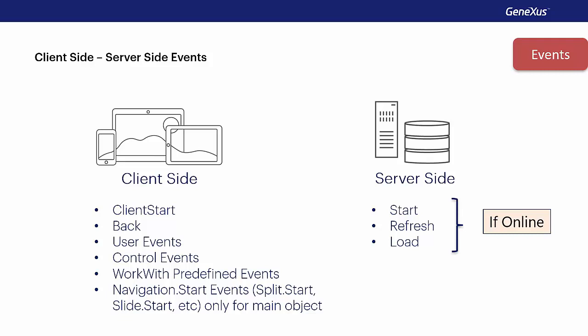If you're experienced in the development of applications for Windows or web platform with GeneXus, then you're already familiar with the server-side events: start, refresh, and load. The client-side events include the system client start and back events, user events, events associated with controls, and some predefined by the work-with pattern, as well as events studied when we saw navigation styles like slide.start. This classification is important because we need to know where each event is executed, since the resources we may use and the applicable restrictions will vary depending on that.